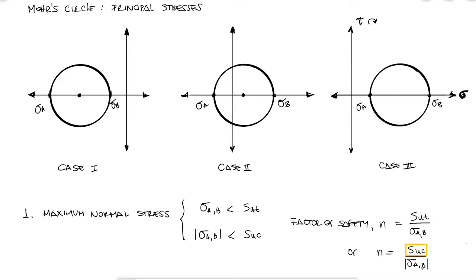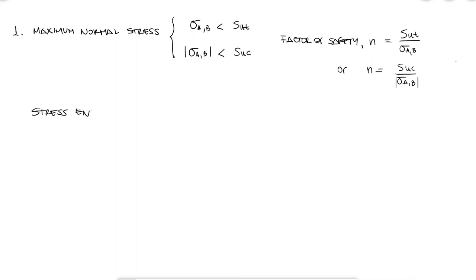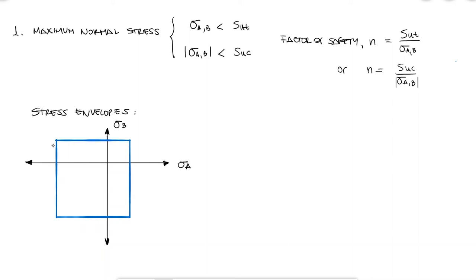Since principal stress A is not necessarily greater or lower than principal stress B, stress envelopes are often used for all the failure criteria, where we have the value of σA on the x-axis and σB on the y-axis. The stress envelope that represents the maximum normal stress failure criterion looks like a shifted square, where the positive values are equal to the ultimate tensile strength and the negative values are equal to minus the ultimate compressive strength.